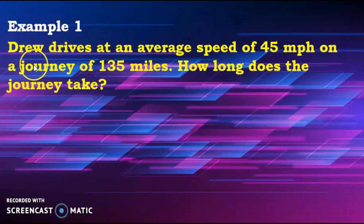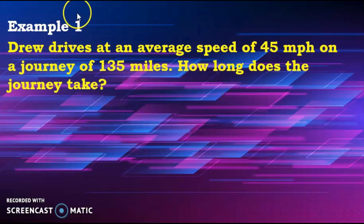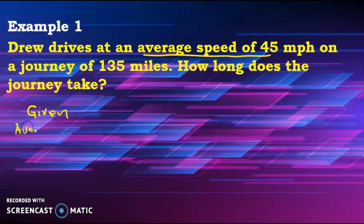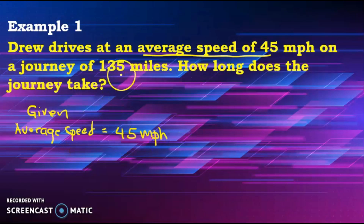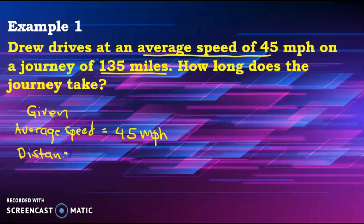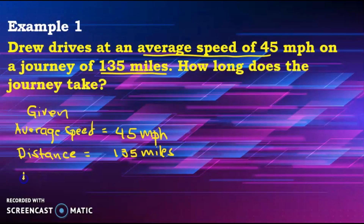Example number one: Drew drives at an average speed of 45 miles per hour on a journey of 135 miles. How long does the journey take? First, let's identify the given. Average speed is 45 miles per hour, and distance is 135 miles. Now, what is missing? We have speed and distance — so what is missing is time.